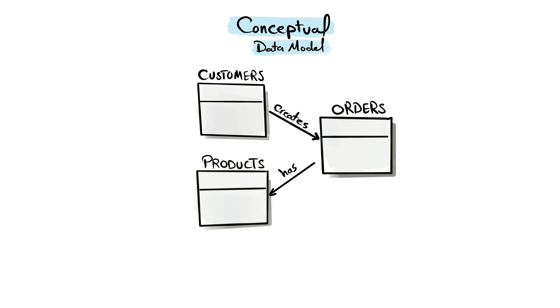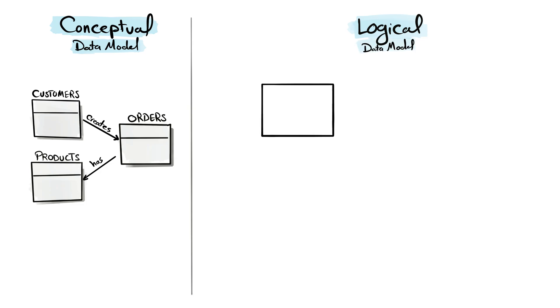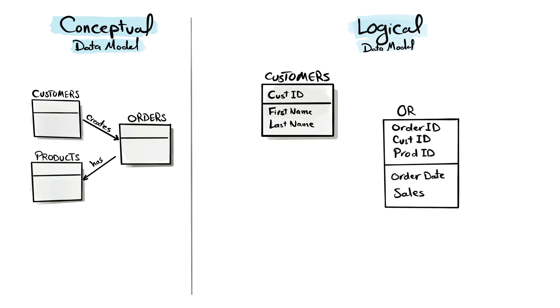The second type is the logical data model. In this data model, we go more into details on how the data is structured and organized. We define in this model the attributes of each entity, and it includes as well constraints and more details about the relationships between the entities. This data model is usually used by database designers and developers as a blueprint for the implementations.